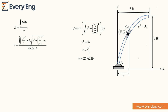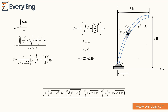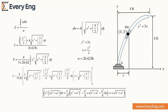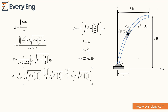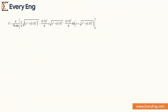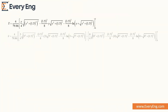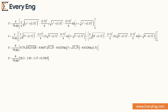Putting all values into the centroid formula, we set up the integration problem. Using the standard integration formula with all values substituted, and simplifying 3/2 as 1.5, we then put in the upper and lower limits. After evaluating, the centroid from the y-axis is 1.23 feet. This is the centroid of the uniform rod in the shape of a parabola.